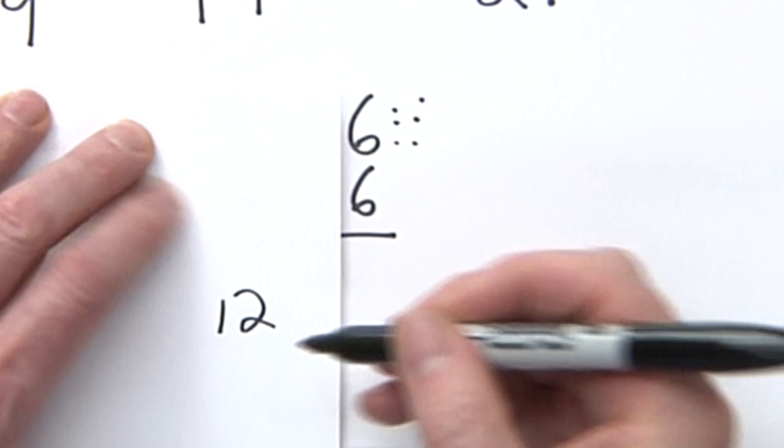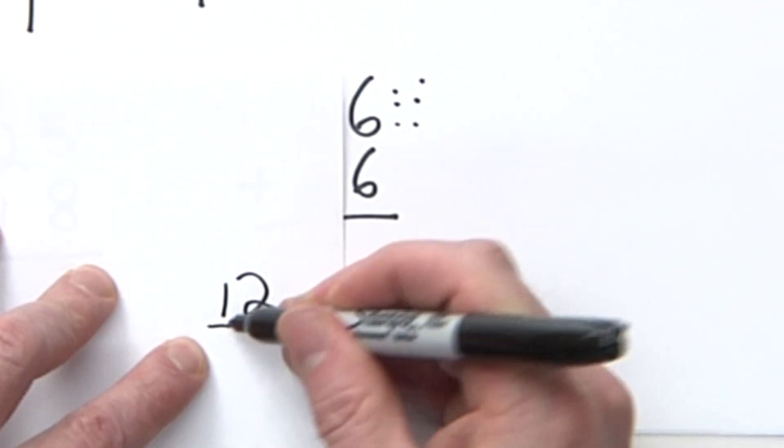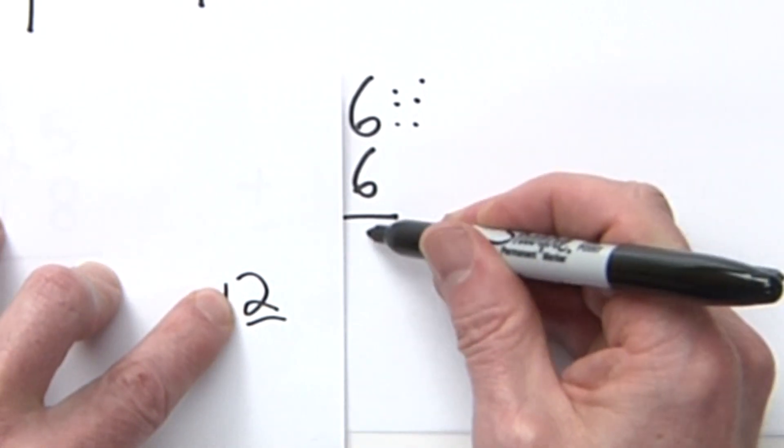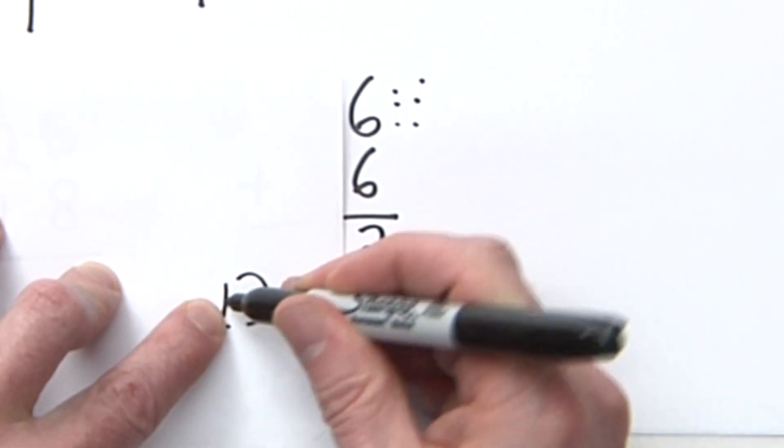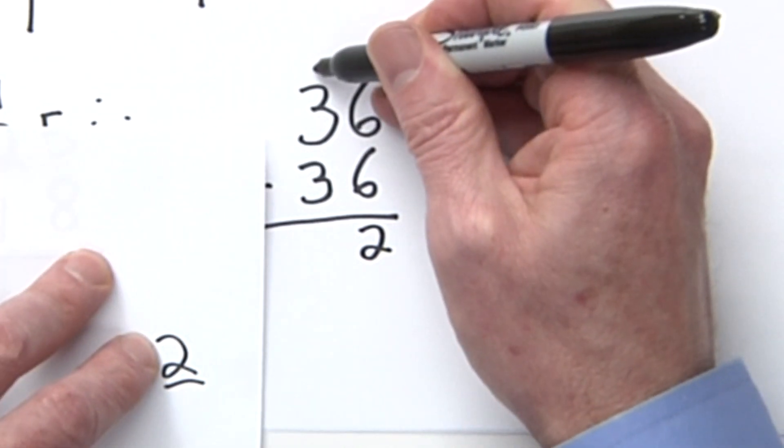All right, 6 plus 6 is 12. Remember, my answer is going to be looking like this: 12. I put the 2 right here - remember that that's in the ones place. This is in the tens place. Put the 2 in the ones place, take the 1, put it in the tens place right on top. Don't worry, it's not going to fall over.